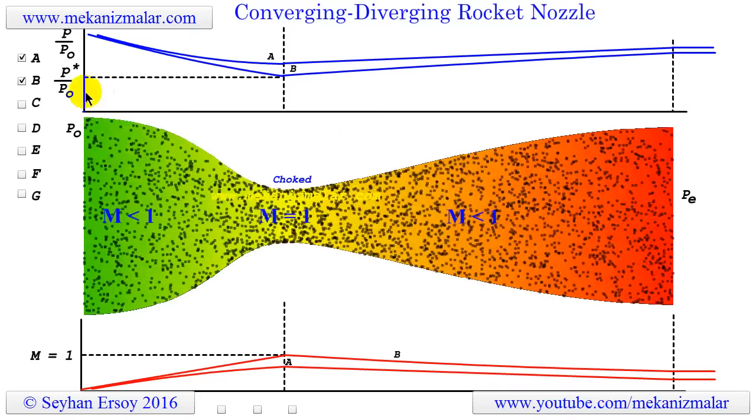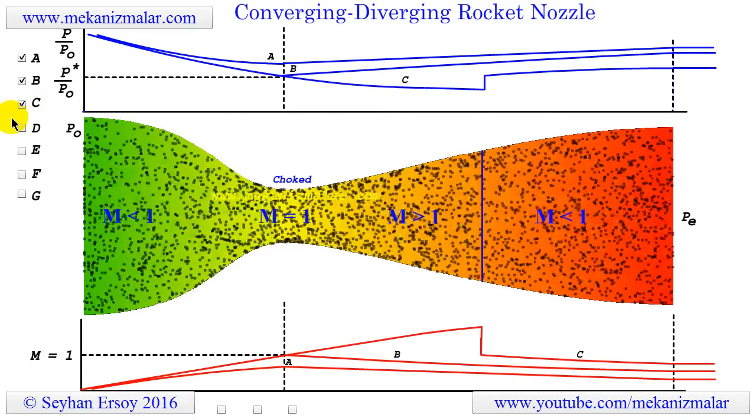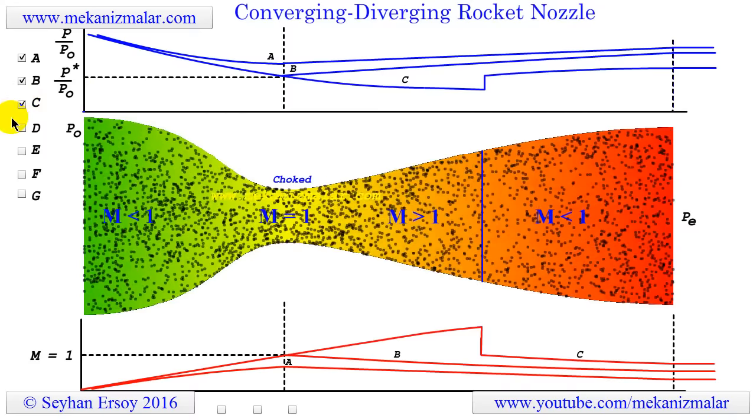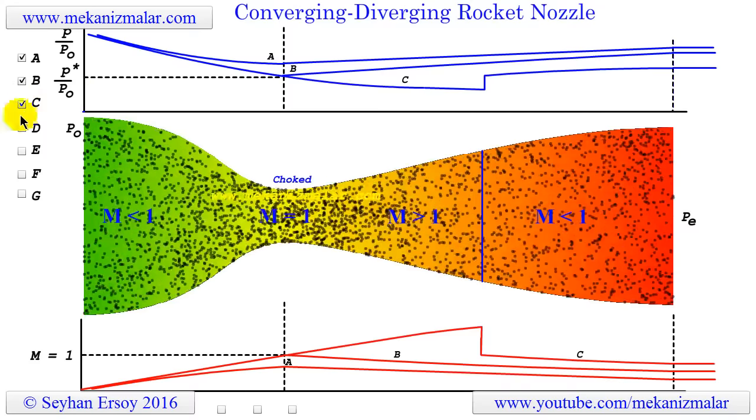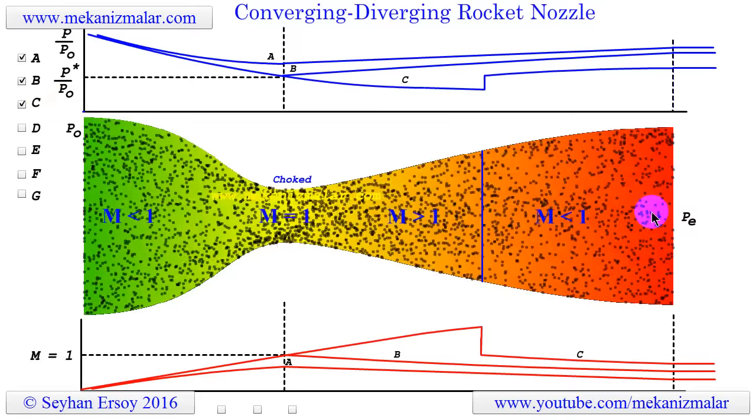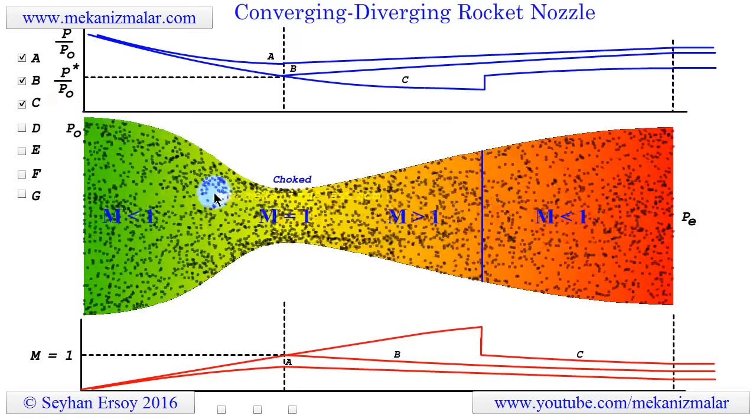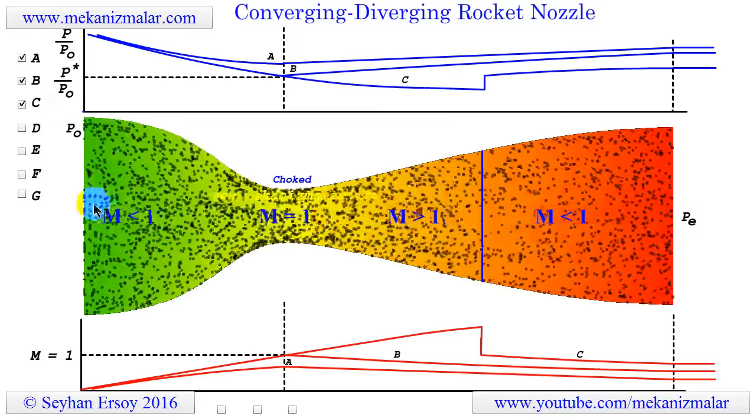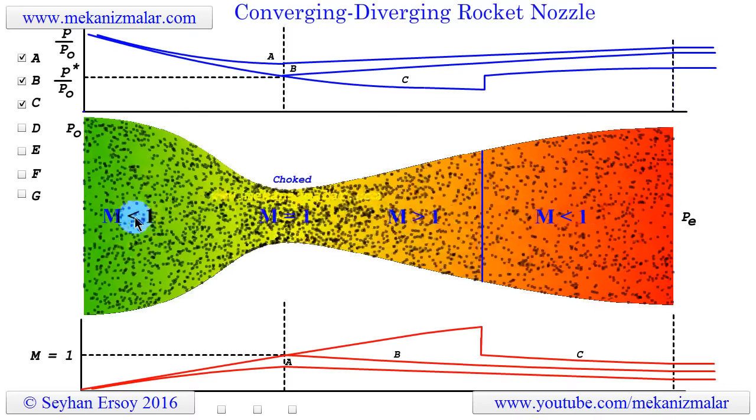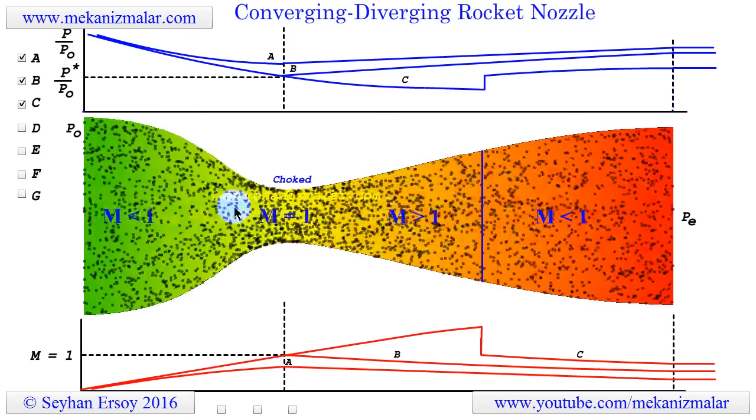In case C, we will further reduce the exit pressure to see how the nozzle will respond. Since the exit pressure is below the choked flow exit pressure, the converging section of the nozzle does not know anything about the diverging section of the nozzle. This means that things are not changing in the converging region.